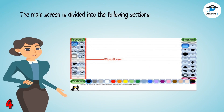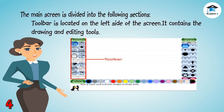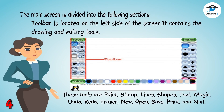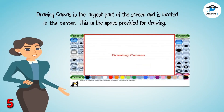The main screen is divided into the following sections. The Toolbar is located on the left side of the screen. It contains the drawing and editing tools. These tools are Paint, Stamp, Lines, Shapes, Text, Magic, Undo, Redo, Eraser, New, Open, Save, Print, and Quit. The Drawing Canvas is the largest part of the screen and is located in the center — this is the space provided for drawing.